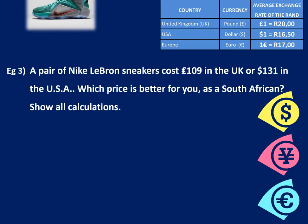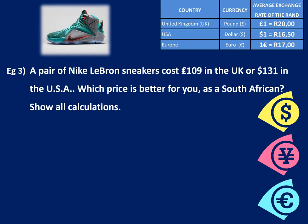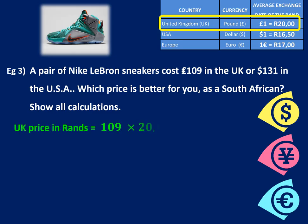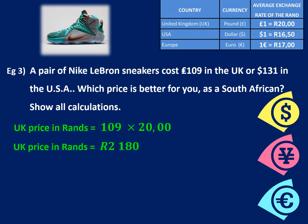Let's look at one more example. A pair of Nike sneakers costs 109 pounds in the UK or 131 dollars in the USA — same pair of sneakers. Which price is better for you as a South African? We need to show all calculations, so we want to see what 109 pounds and 131 dollars are each worth in rands. Using the pound-rand exchange rate of approximately 20 rand per pound, for 109 pounds we multiply by 20. So in the UK the price will be 109 times 20, which is 2,180 rand approximately.